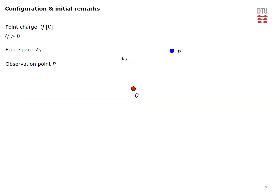This is the configuration. We are considering a point charge that you can see here. We assume that it's positive and it's located in free space with free space permittivity ε₀. The objective is to determine the field at the observation point P.